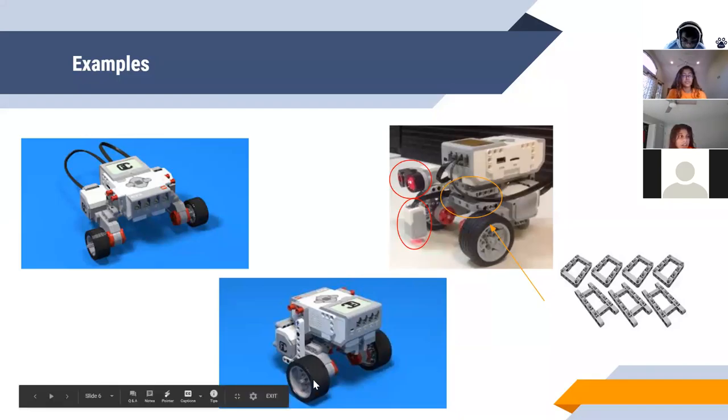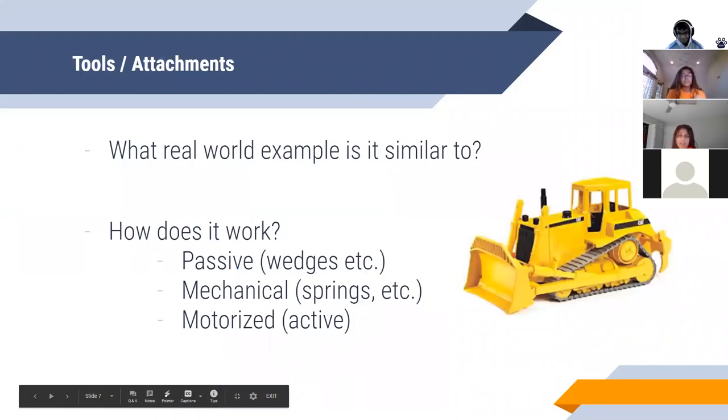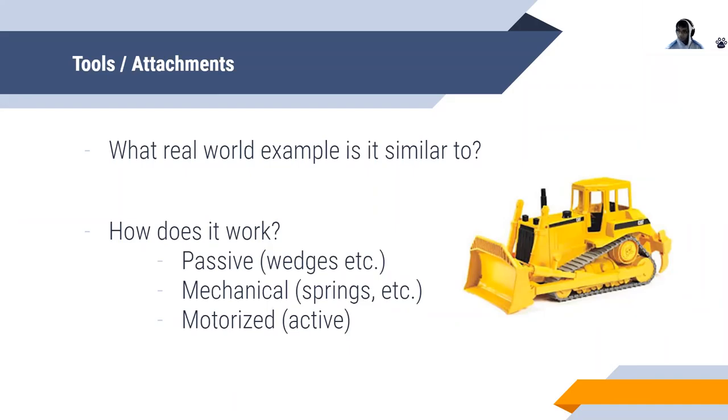Moving on to attachments. The first thing to focus on is what real-world example it's similar to. If you're trying to push something across the ground, it's really similar to a bulldozer. You probably want a shovel-shaped bucket thing on the front of your robot to push it around and make sure that it stays with your robot through soft and hard turns with little walls on the side. Another thing to focus on is how it works. So there are three types of ways it'll work. The first one is passive attachments, which is like the bulldozer example, and these are the ones that don't require motors or any sort of stored energy. Another example of this would be like a prong sticking out of your robot to pick up or drop off one of the game pieces that have loops on them.